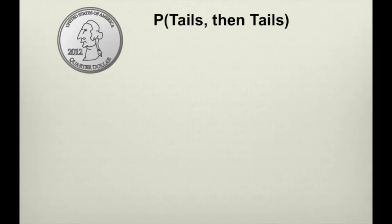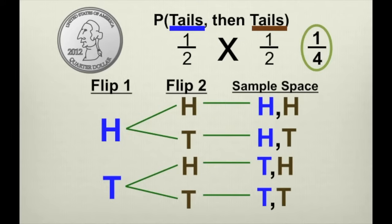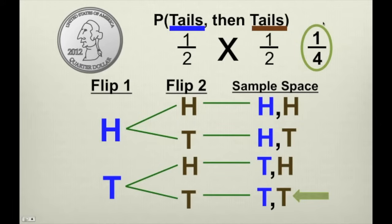Now, what if we flip a coin twice and want to land on tails for the first event and then tails for the second event? The probability of tails for the first event is one-half, and tails for the second event is also one-half. We multiply our probabilities and end up with one-fourth. Looking at the tree diagram, the sample space has four outcomes, and only one of them gives us tails for both events, so our probability is one-fourth.